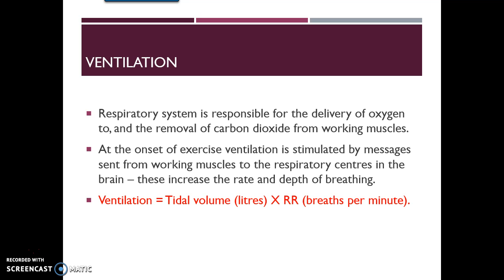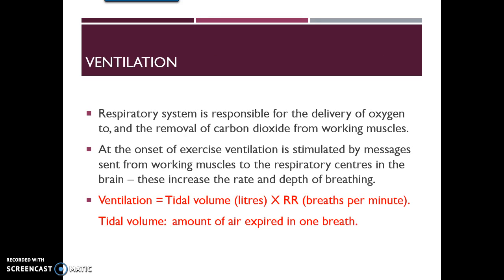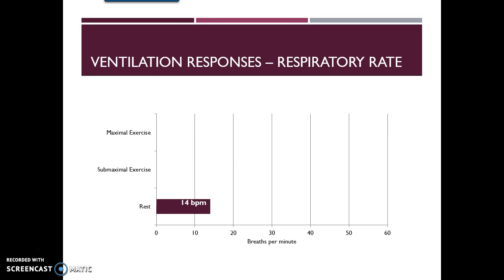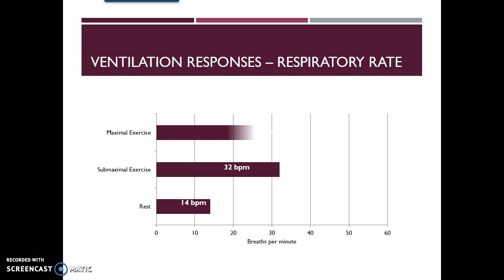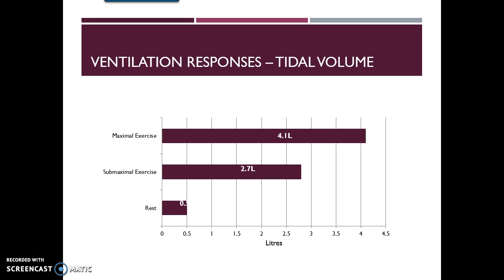Ventilation refers to the total amount of oxygen we're inhaling per minute. It's expressed as tidal volume in liters multiplied by our respiratory rate. Tidal volume is the amount of air expired per one breath, and respiratory rate is the number of breaths per minute. At rest, respiratory rate is around 14 breaths per minute; at sub-max exercise, 32 breaths per minute; and at maximal exercise, up to 50 breaths per minute. Tidal volume increases from 0.5 liters at rest to 2.7 liters at sub-max and 4.1 liters at maximal exercise.